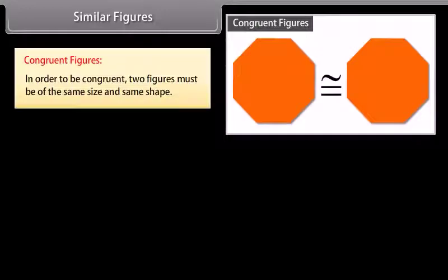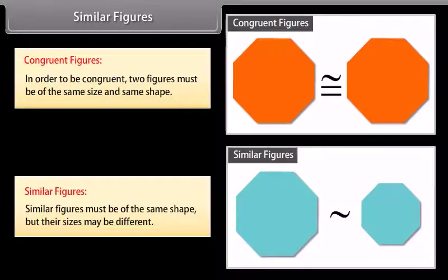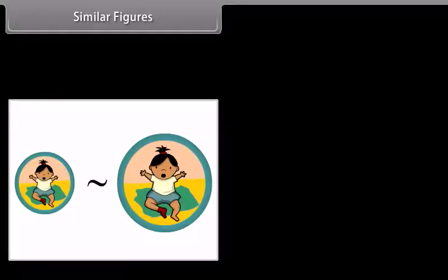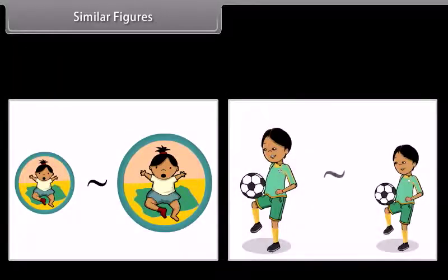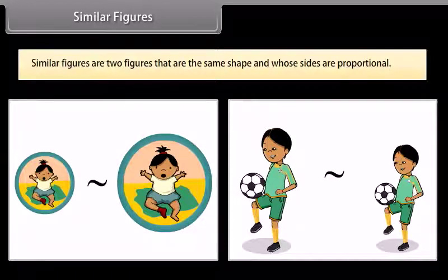Similar figures. Congruent figures: in order to be congruent, two figures must be of the same size and same shape. Similar figures: similar figures must be of the same shape but their sizes may be different. This is the symbol that means similar. When you have a photograph enlarged, you make a similar photograph. A photograph can also be shrunk to produce a slide. So, similar figures are two figures that are the same shape and whose sides are proportional.